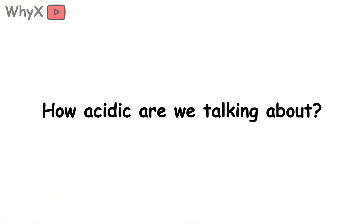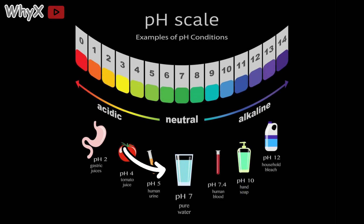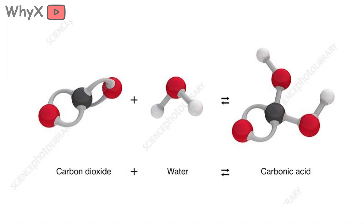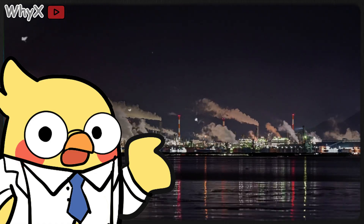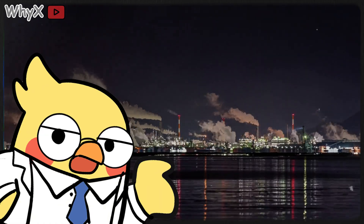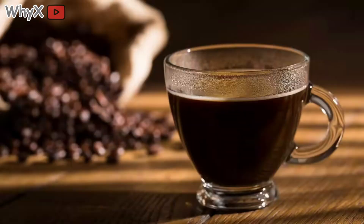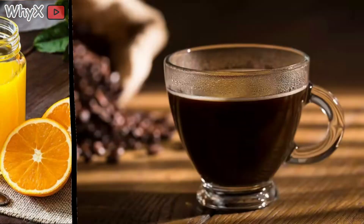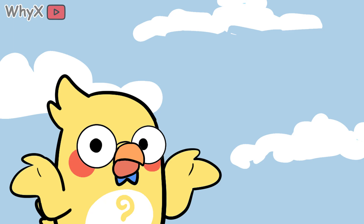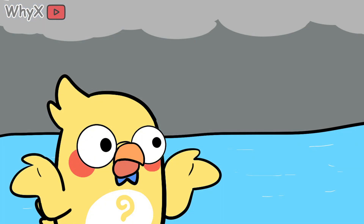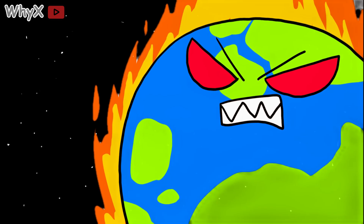You might wonder, how acidic are we talking about here? Pure water has a pH of 7. Rainwater is naturally a little acidic, around 5.6, because carbon dioxide dissolves in it and forms weak carbonic acid. But in places with heavy industrial pollution, the pH can drop to 4, even 3.5 — roughly as acidic as black coffee or orange juice. That might not sound terrifying, but for ecosystems that evolved to live in near-neutral water, that small change is deadly.